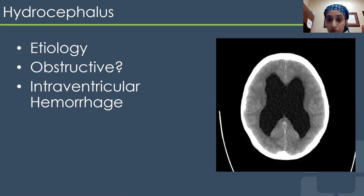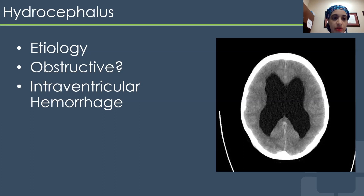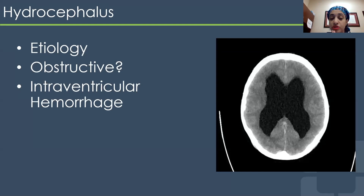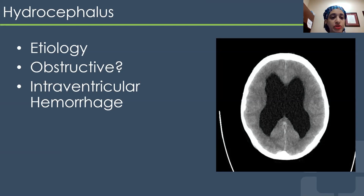When thinking about cerebrospinal fluid diversion and placing a drain into the ventricular space, we want to make sure there are no obstructive lesions or masses apparent on the head CT. We actually just had a patient come in this past week — found down on the street with massive hydrocephalus — and we could not appreciate anything obstructive.